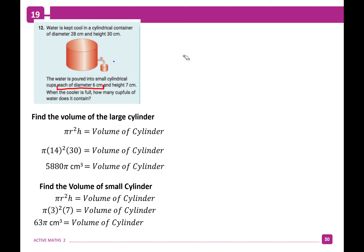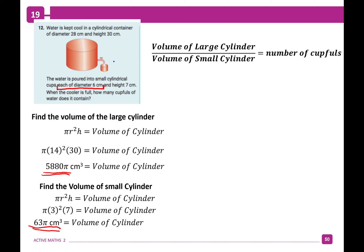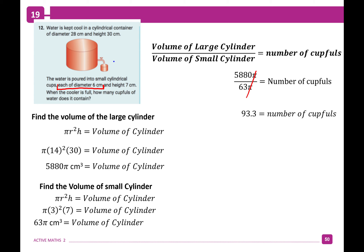We want to see how many times the small cup volume goes into the large cylinder volume. So divide: 5,880π ÷ 63π = 93.3 cupfuls. Find the volume of both and divide them — that's question 12.